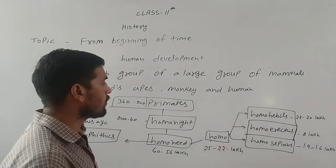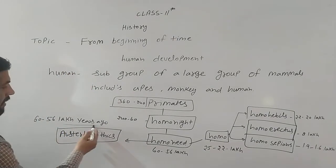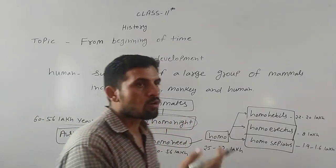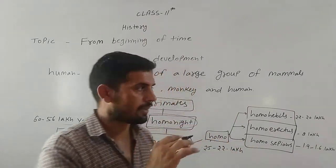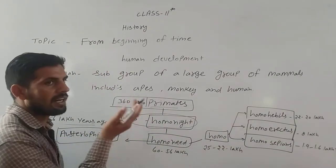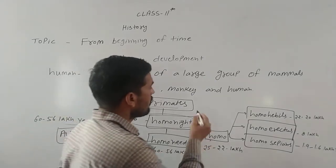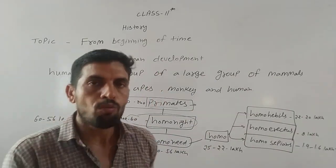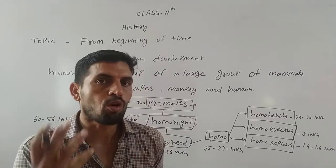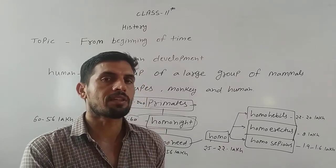प्राइमेट्स से पहले जो इंसान थे, जब कार्बन डेटिंग मेथड से पता चला, उसमें लगभग 56,000,000 साल पहले से होमोनाइट प्रजाति आगे आती है। उससे पहले की प्रजाति के बारे में पता नहीं चल पाता। जो प्राइमेट्स थे, उनकी प्रजाति लगभग 307 से 240 लाख साल पहले मानी जाती है। इनके बारे में बहुत कम पता चलता है। इन जानवरों की हड्डियां जो हैं, वो human fossil के रूप में change होकर एक पत्थर के रूप में हो जाती हैं, जिससे उनकी पहचान पूरी नहीं हो पाती।